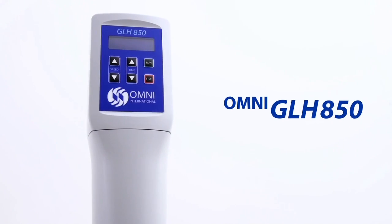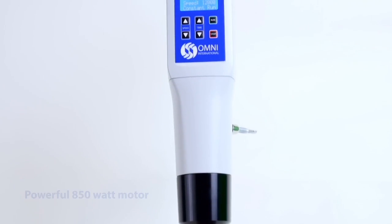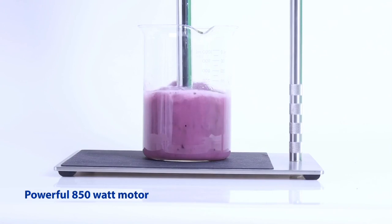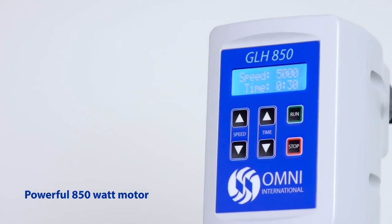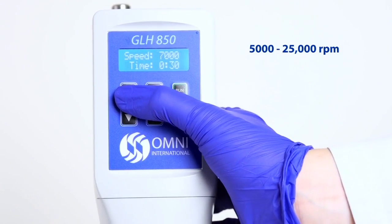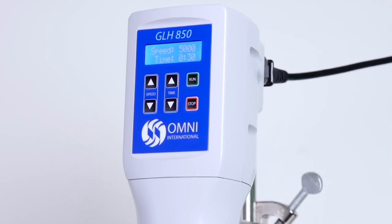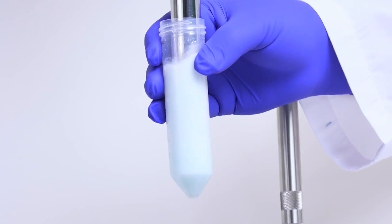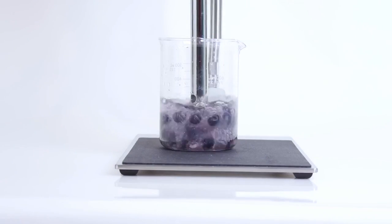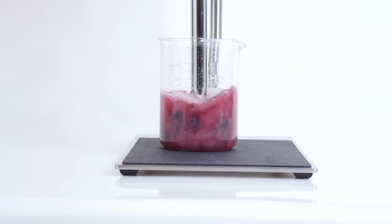The Omni GLH 850 offers the ultimate performance with a powerful 850-watt motor and digital speed controls ranging from 5,000 to 25,000 rpm. It is capable of processing at smaller lab-scale quantities or at larger production-scale quantities up to 10 liters in volume.